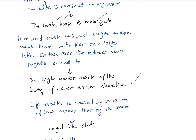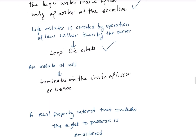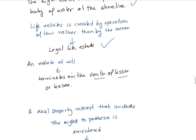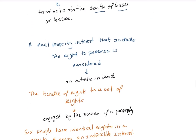A legal life estate is created by operation of law rather than by the owner's deed. An estate at will is terminated by either party. A real property interest that includes the right to possess is considered an estate in land.